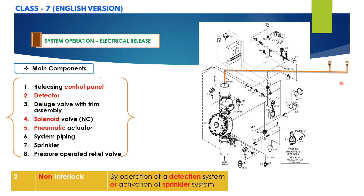However, if a sprinkler opens prior to the operation of the detection devices, or anytime the pneumatic pressure in the sprinkler piping is lost, the pneumatic actuator will open. When the pneumatic actuator opens, pressure is released from the priming chamber faster than it is supplied through the restricted orifice, and the deluge valve clapper opens to allow water to flow into the system piping and alarm devices.